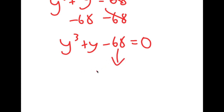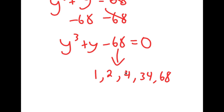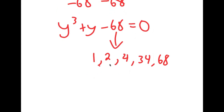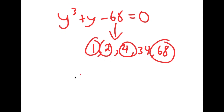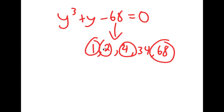The factors of 68 are 1, 2, 4, 34, and 68. 1 wouldn't work because 1 times 68 — we can't subtract those two to get y — and 2 wouldn't work either. The only one that would work is 4, because if you divide y minus 4 with y to the power of 3 plus y minus 68, that would be a factorable factor. So now that we know that 4 is a proper factor...